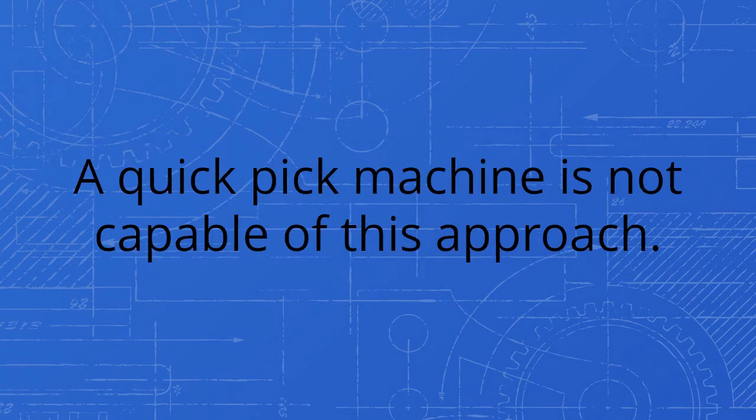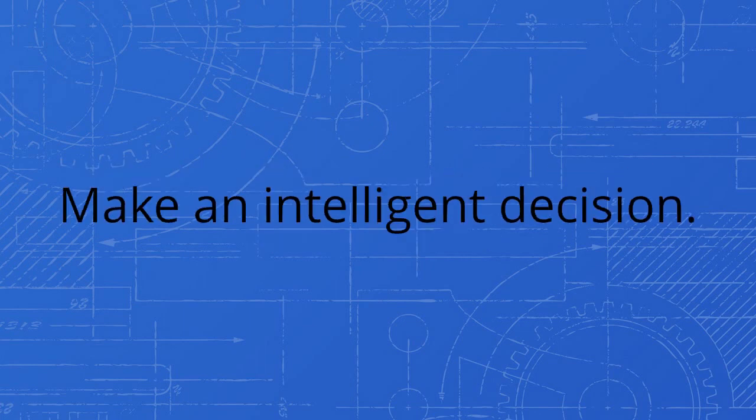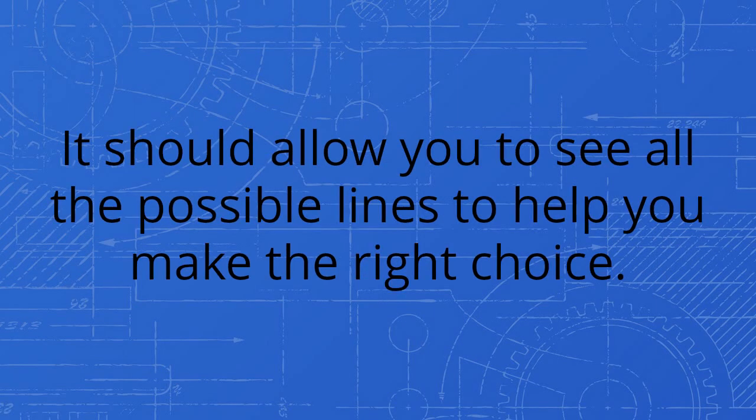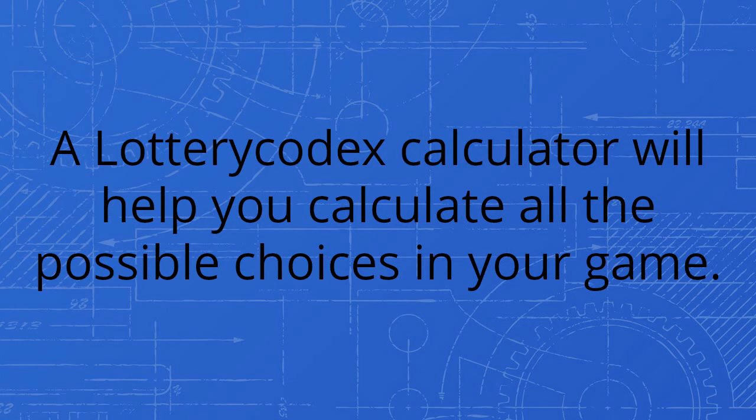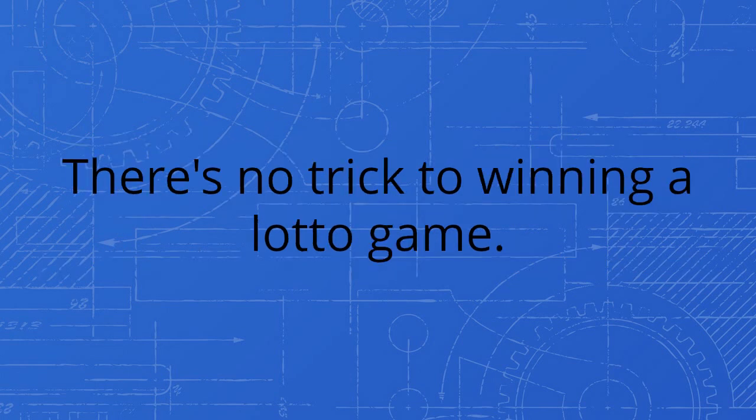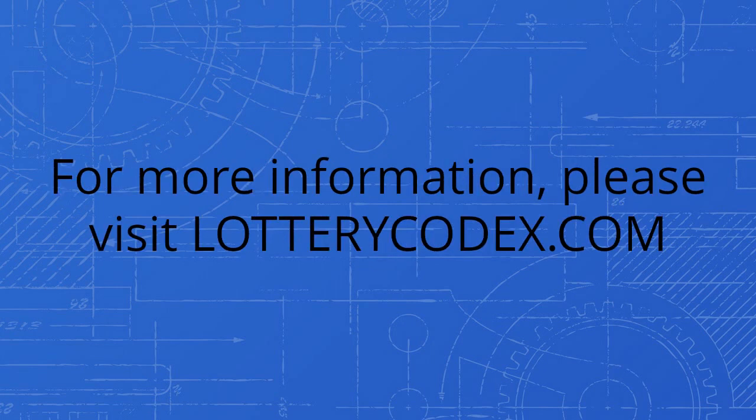Conclusion: what is the best way to win the lottery? Make an intelligent decision. A true lottery strategy is mathematical. It should allow you to see all the possible lines to help you make the right choice. A lottery codex calculator will help you calculate all the possible choices in your game. It finally helps you make the right choice to give you the best ratio of success to failure. There's no trick to winning a lotto game. You can waste money or you can play smart. For more information, please visit lotterycodex.com.